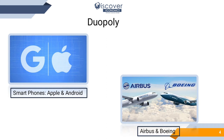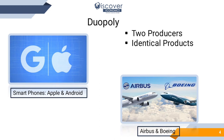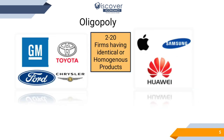Duopoly is when two companies or firms have complete control over supply in a particular market. Examples include smartphones like Apple and Android, and aircraft manufacturers Airbus and Boeing. A characteristic of duopoly is that the two producers have distinct, identifiable products — Apple cannot be mixed up with Android, and Airbus cannot be mixed up with Boeing. There is also a barrier to entry, meaning not every producer can become a supplier in a duopoly market.